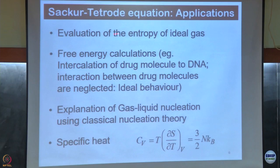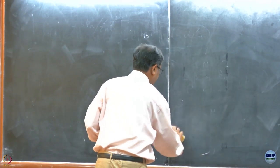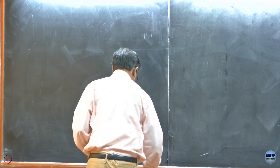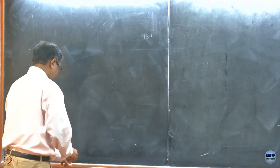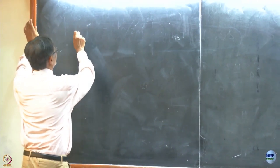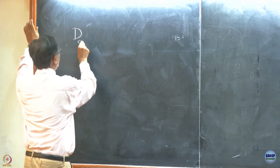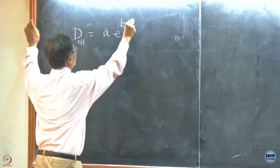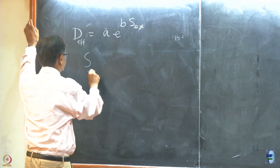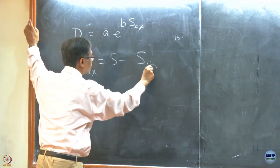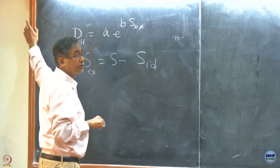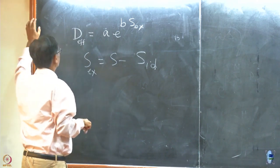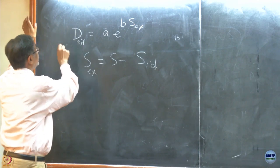So Sackur-Tetrode equation, there are many applications. One is evaluation of the entropy of ideal gas which is used in these. Let me write down this, this is in total from my statistical mechanics book, line by line, probably the mistakes you find here will be mistakes will also be there. So please just go through the book once and let me know if there are any mistakes. So the diffusion is called Rosenfeld scaling: D or I sometimes would be effective diffusion in an interacting system is A e to the power B times Sx, and then Sx is entropy minus ideal entropy.